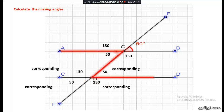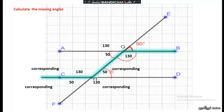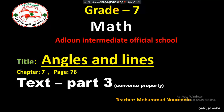We can also use the alternate angles property. This angle and this angle are alternate angles — they both equal 50 degrees. This angle and this angle are also alternate, forming a Z shape, so they are equal at 130 degrees each.